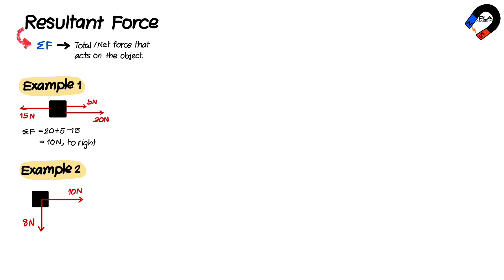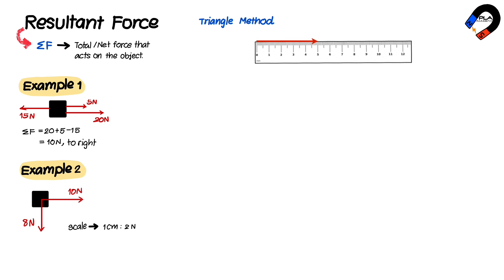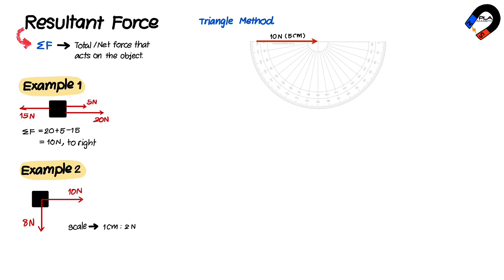In Example 2, there are two methods to find the resultant force: the triangle method and the parallelogram method. We set the scale as 1 centimeter to 2 Newtons. To use the triangle method, draw a force of 10 Newtons for 5 centimeters, then measure the angle at the head of the 10 Newtons force using a protractor as 90 degrees.